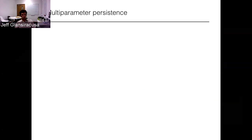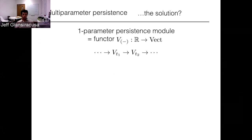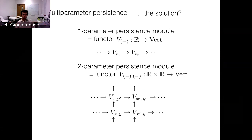A one-parameter persistence module is a functor from the poset of real numbers to the category of vector spaces, giving a sequence of vector spaces linked together by linear maps. In the two-parameter case, we take the poset of real numbers crossed with itself and get a functor into vector spaces — a two-dimensional diagram where you can move to the right and up but never down or to the left. We can also talk about three-parameter, four-parameter, and n-parameter versions.